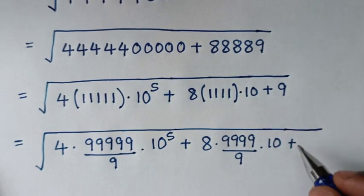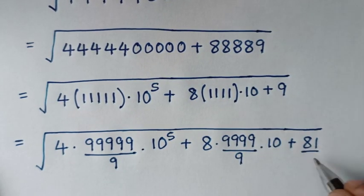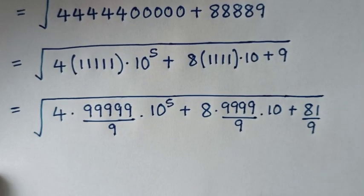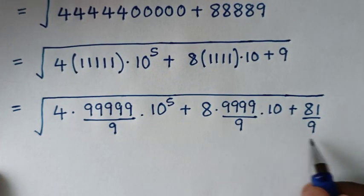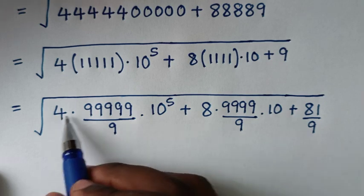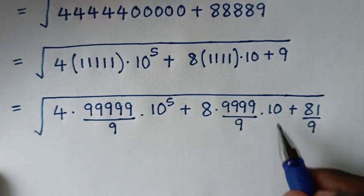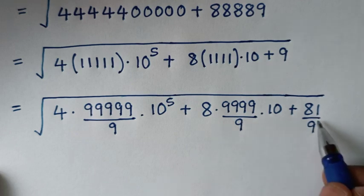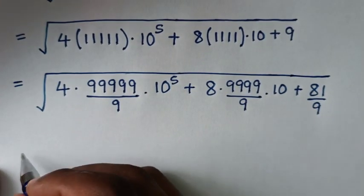To have a common denominator, we express everything over a common denominator of 9.